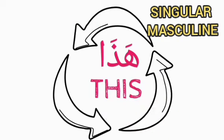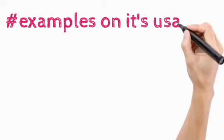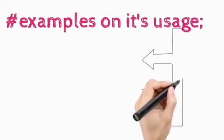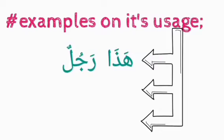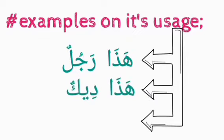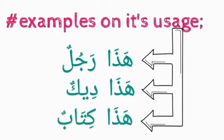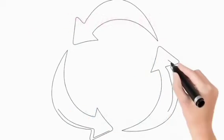Haaza, which simply means 'this'. Examples on how you can use haaza: haaza rojulun — this is a man; haaza deekun — this is a rooster; haaza kitabun — which means this is a book.